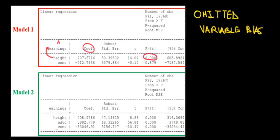So how we would interpret it is: if someone's height is higher by one centimeter—if height increases by one centimeter—then earnings would go up by 707.67 dollars per year.